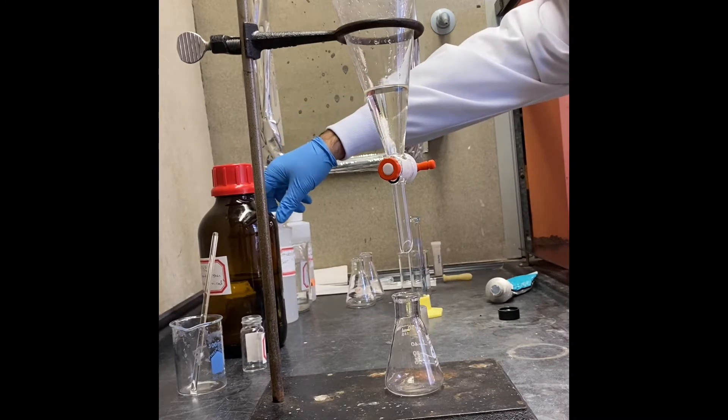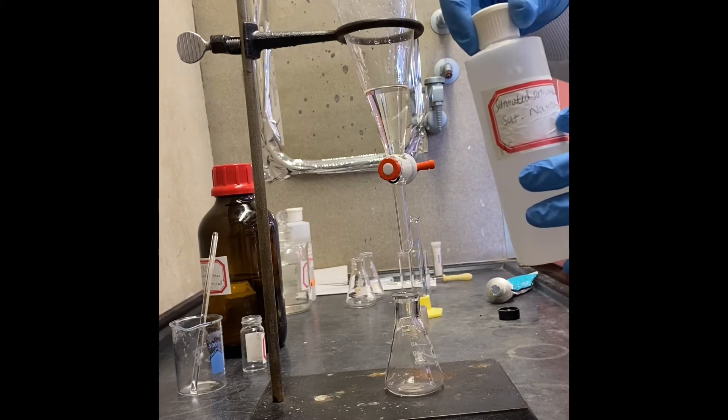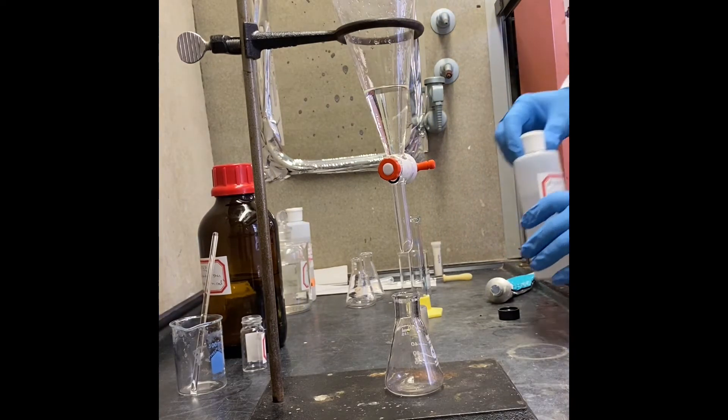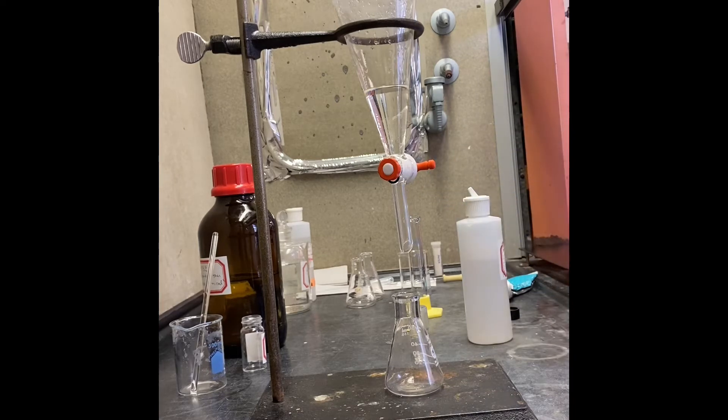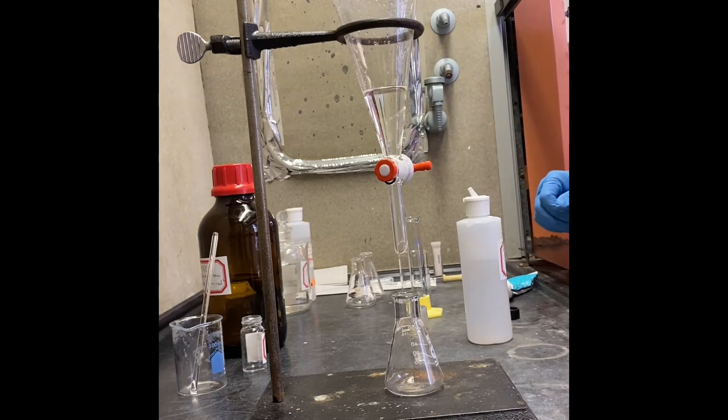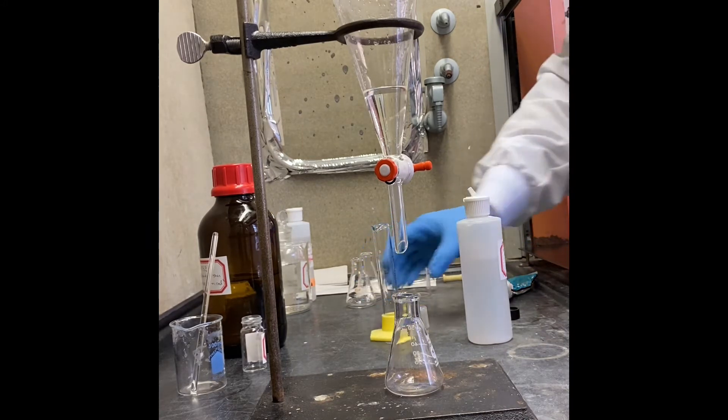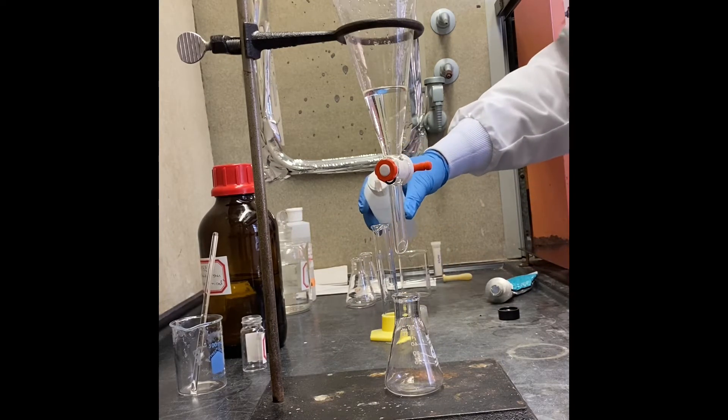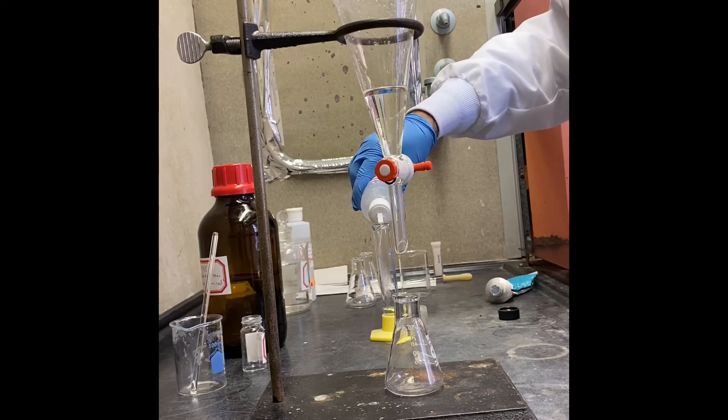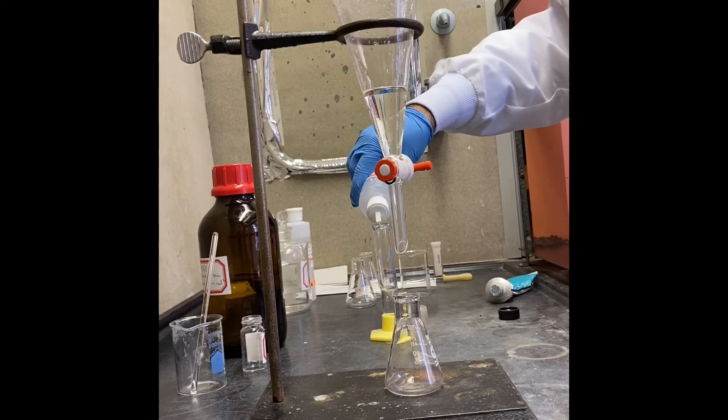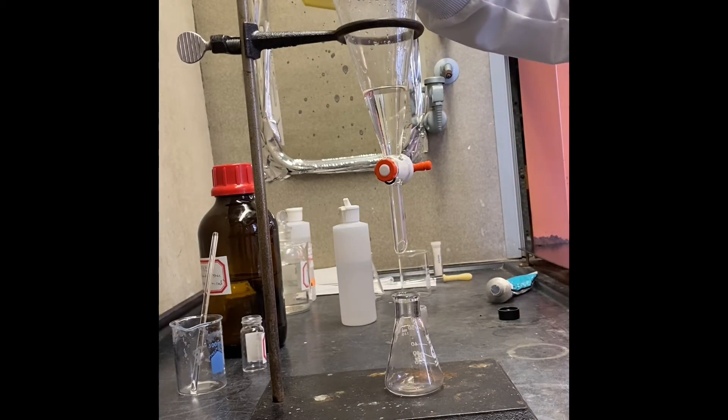We know those functional groups have different solubility, so we're going to start with saturated sodium bicarbonate which is going to do a reaction with carboxylic acid and convert it to an ion. Everything's in the organic layer now, and they're going to be transferred to the aqueous layer. I'm going to add 15 milliliters of bicarbonate solution to my separatory funnel.